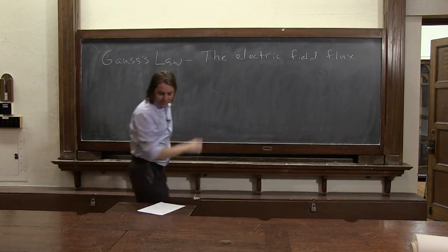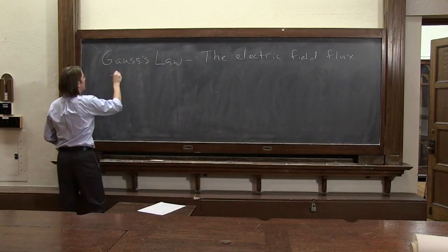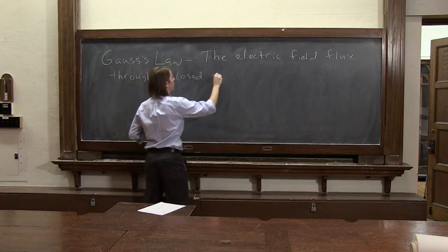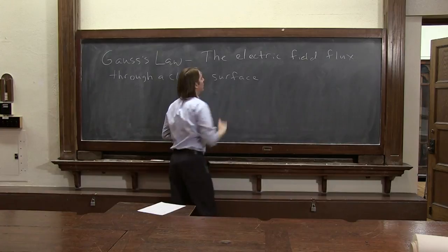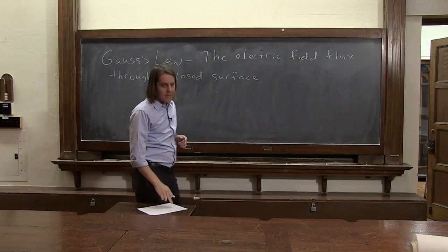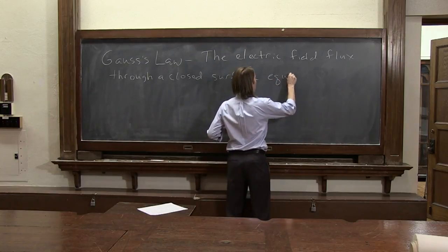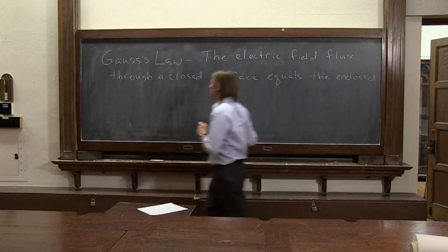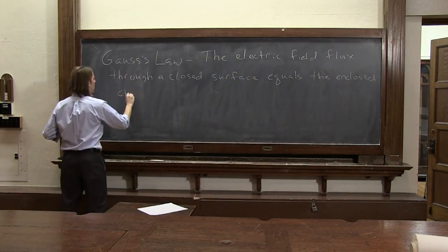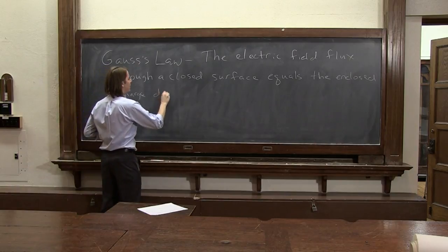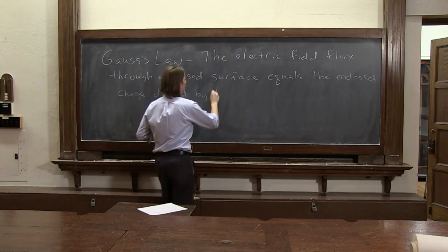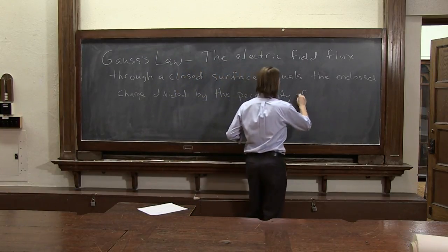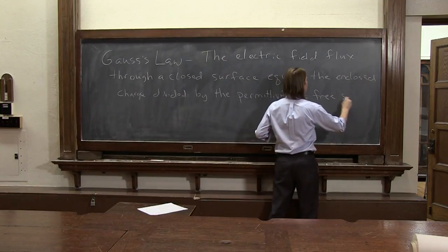You know what that means, right? The electric field flux through a closed surface equals the enclosed charge divided by the permittivity of free space.